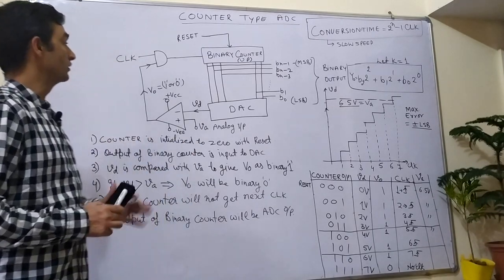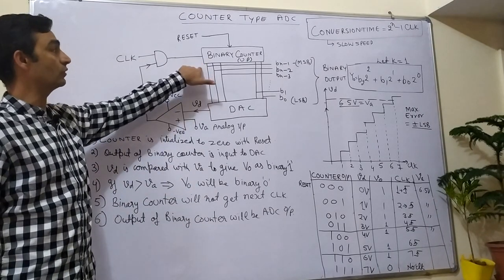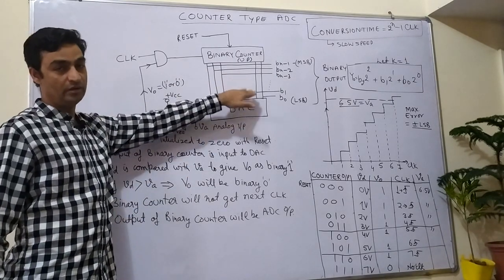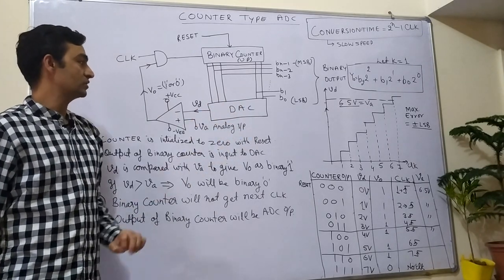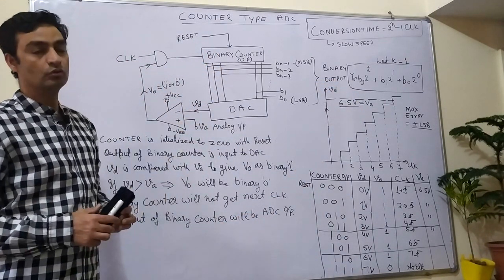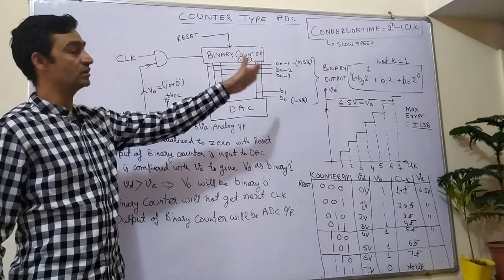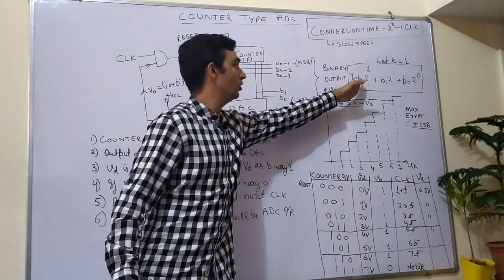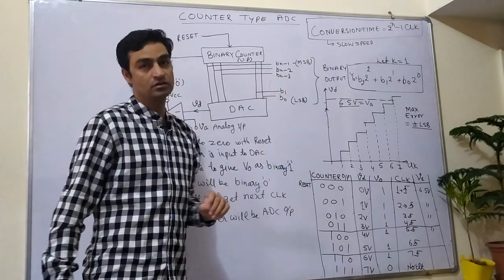This is the block diagram of counter type ADC. It makes use of a binary up counter — not a down counter — counting from 000 to 001 and so on. This is an n-bit counter that can count to any length. The digital to analog converter uses the equation: V_out = B2·2² + B1·2¹ + B0·2⁰, where B2 is MSB and B0 is LSB. This equation extends to n−1 bits; here we have truncated it to a 3-bit sequence.